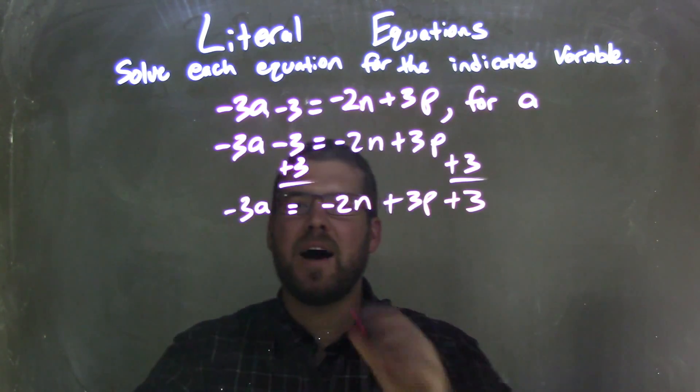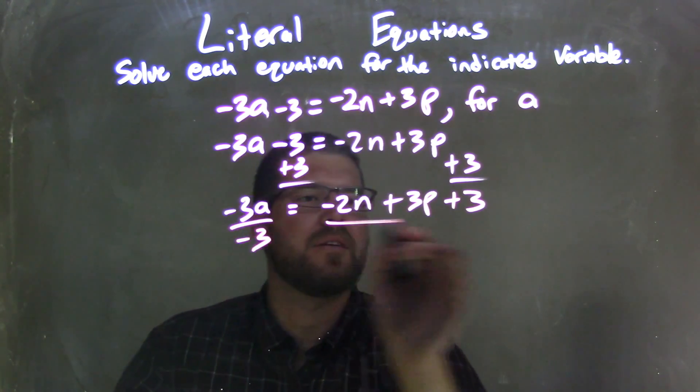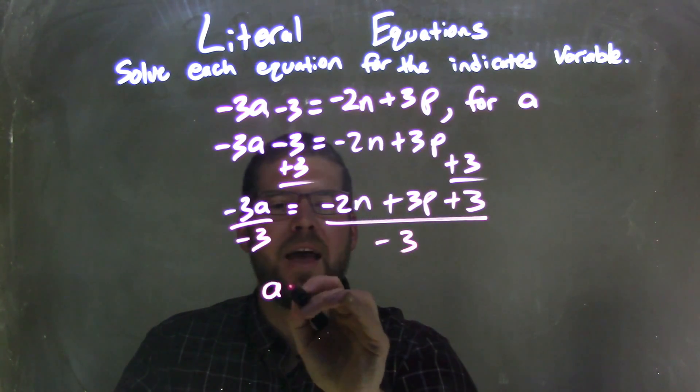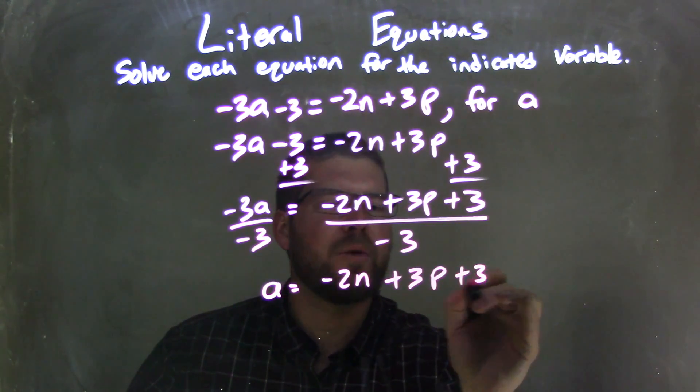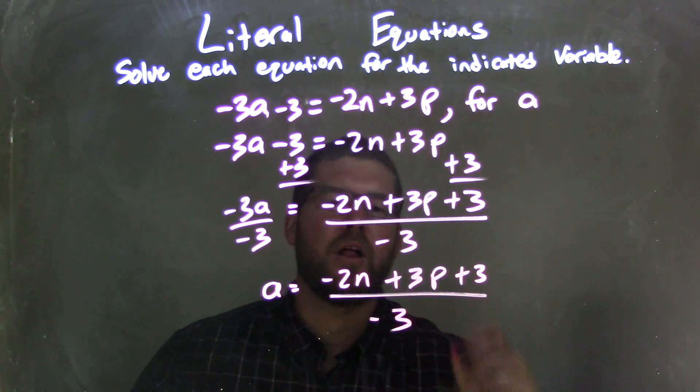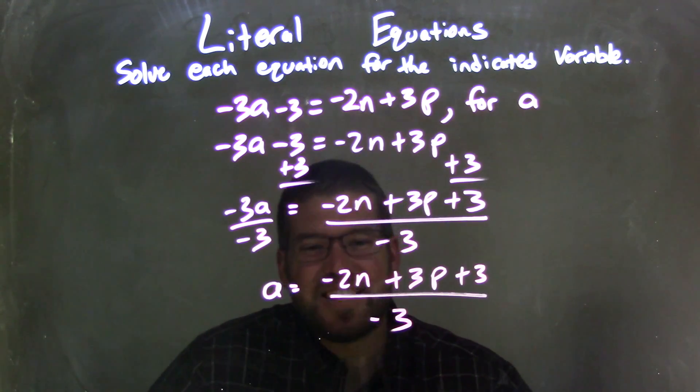So now all I'm going to do is divide by negative 3 on both sides, and now I'm left with a equals negative 2n plus 3p plus 3 all over negative 3. And essentially we're done. I'm happy with this answer. I think it's a fantastic answer.